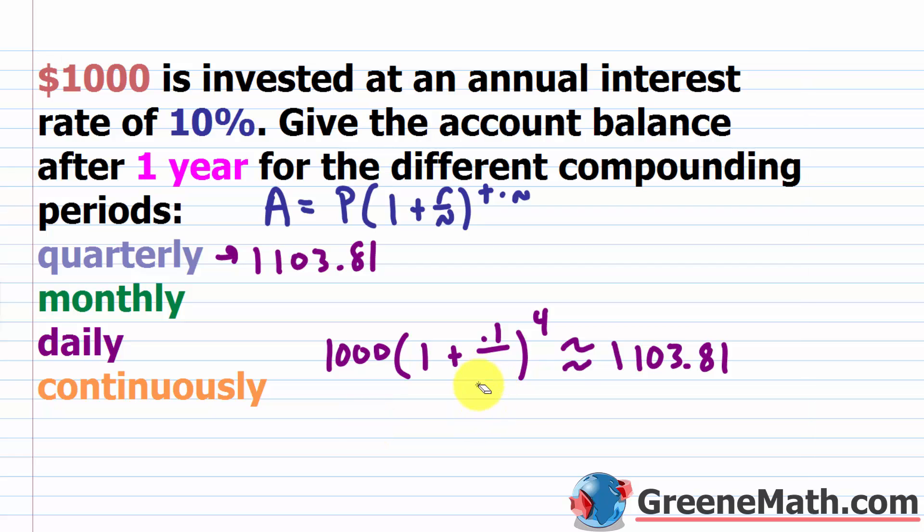Let's see this. So for monthly, all I want to do is put a 12 here and a 12 here. Everything else is the same. If you punch this up on a calculator, you're going to get about $1,104.71. We increased the number of compounding periods from four to 12, and we saw that we ended up with more money at the end of the year.